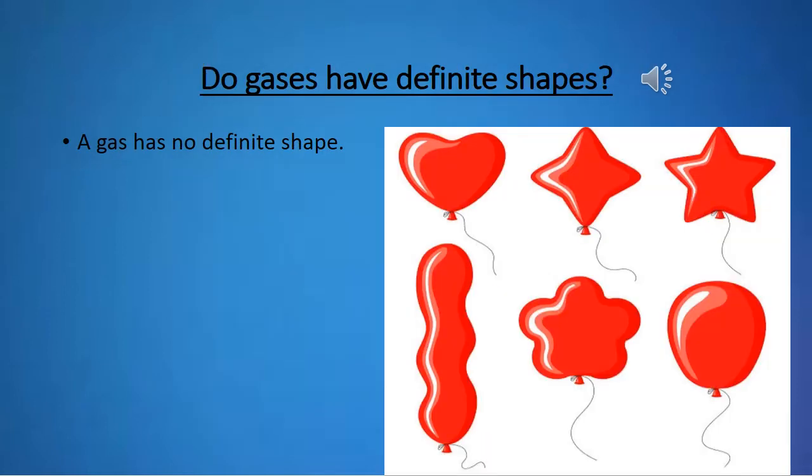Do gases have definite shapes? Now see the diagram. The balloons are in different shapes, which means a gas has no definite shape.